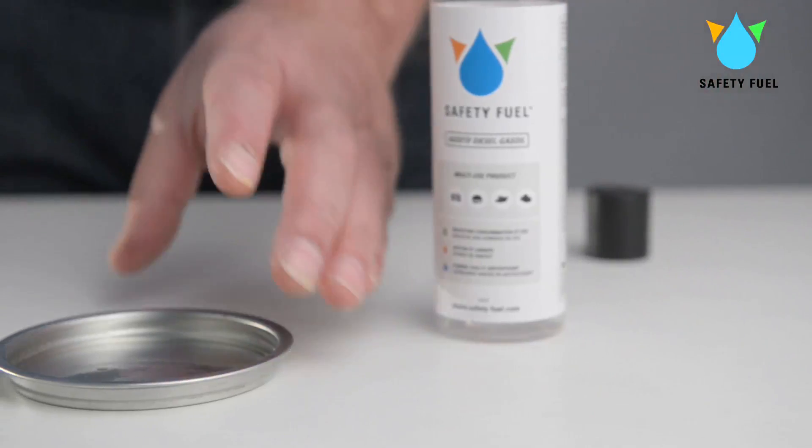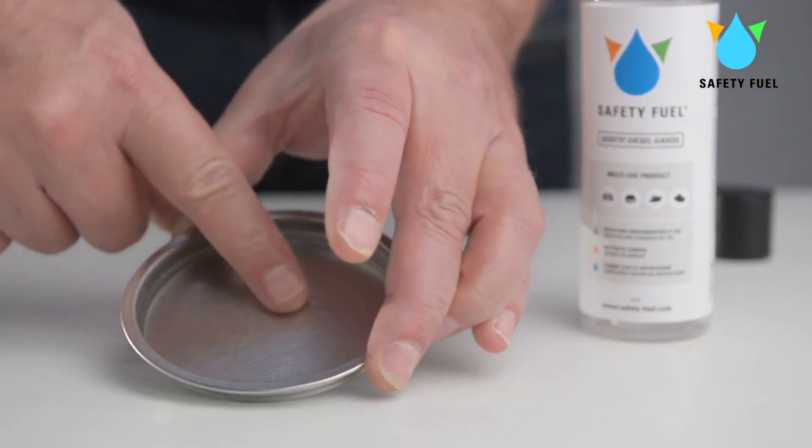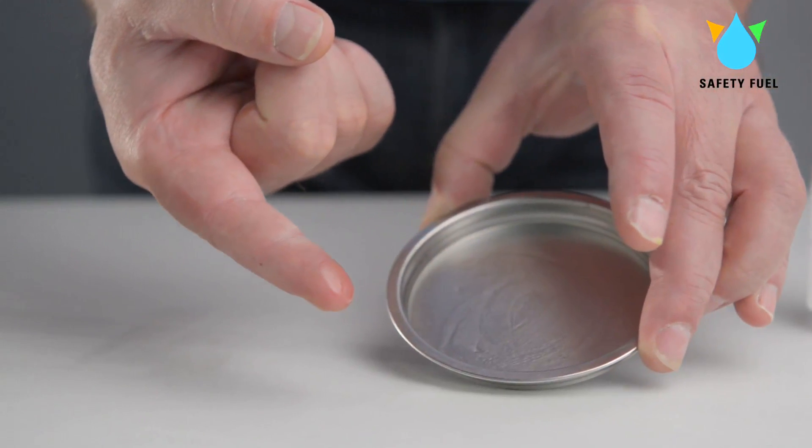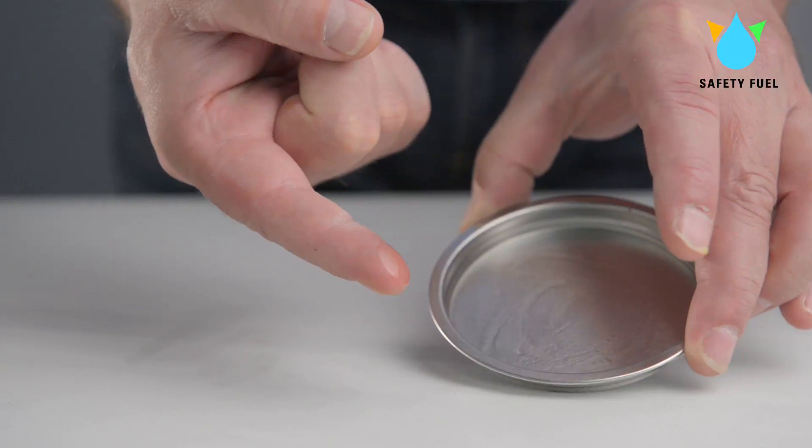With SafetyFuel there is no residue at all. On the bottom of the plate we can notice a clean lubricating film. This demonstration shows that SafetyFuel SF5100 improves clean combustion and acts as a lubricant for the injection pump and engine parts.